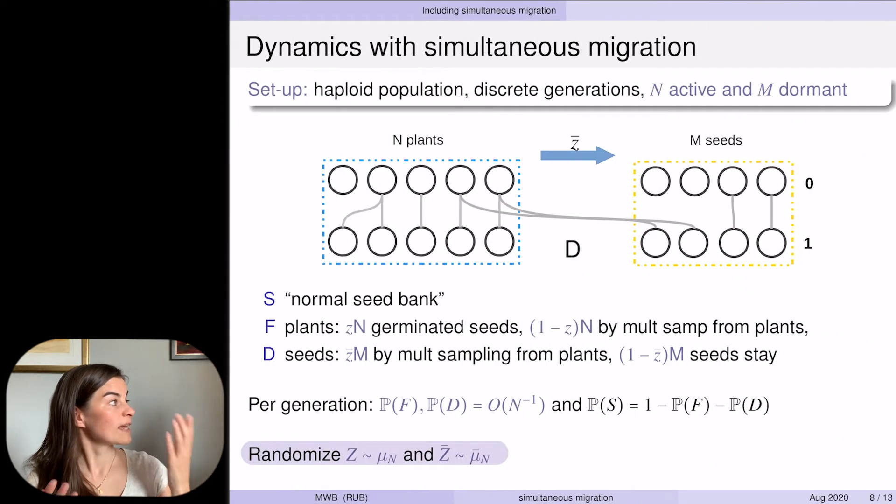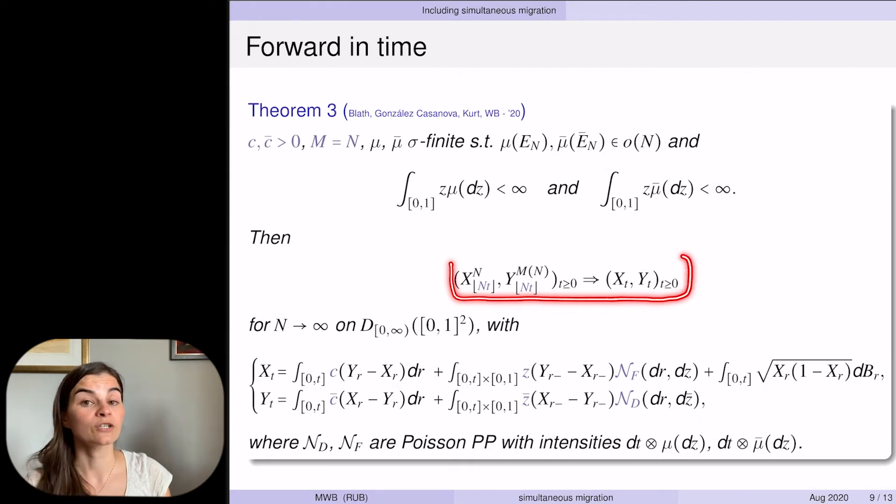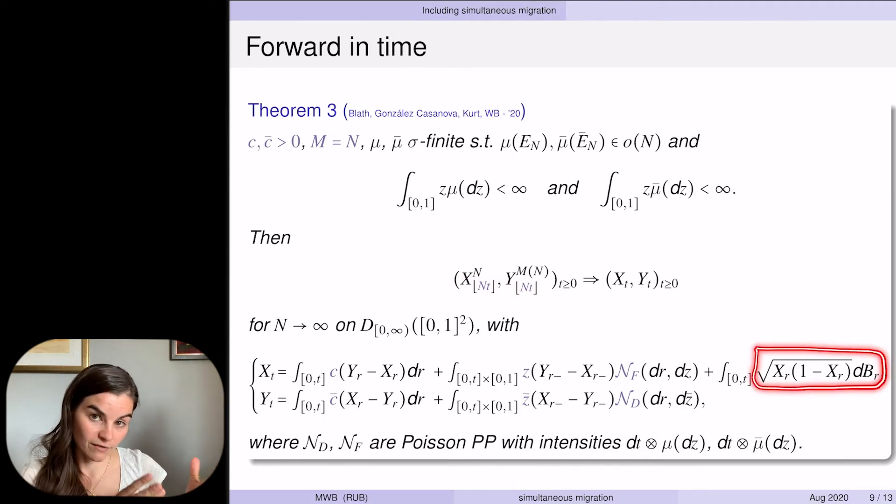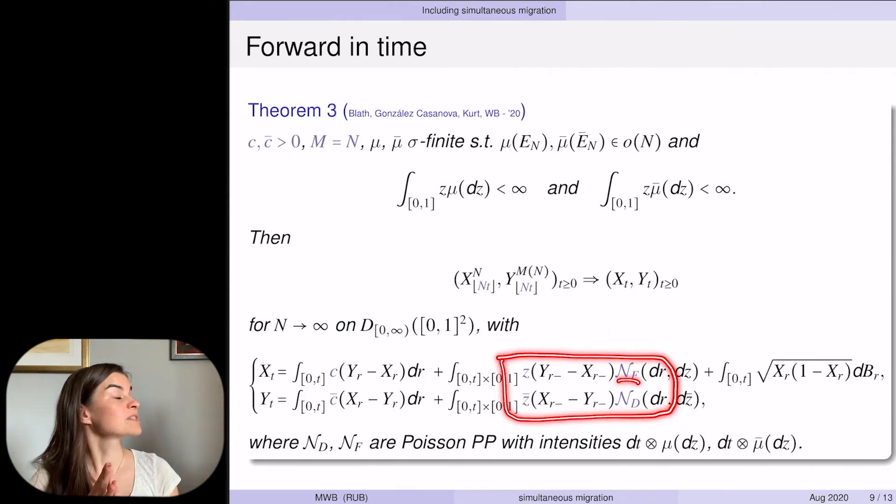With that model you still get scaling limits just as before. Our frequency of purple individuals in the active respectively dormant population converges to the solution of this integral equation. You recognize the component that belongs to the Wright-Fisher diffusion—the genetic drift—and you recognize the terms that belong to the individual migration between the active and the normal population. But now in addition you have jumps in the migration where the size and time of these jumps are governed by Poisson point processes N_f and N_d.